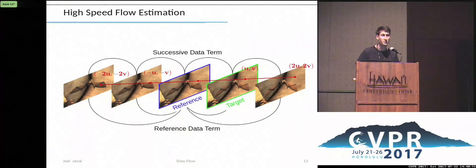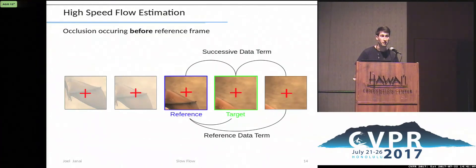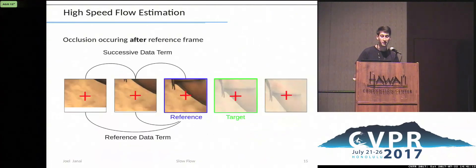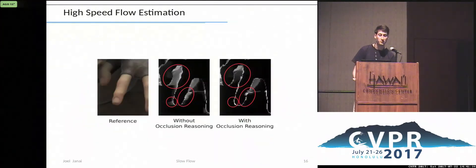To prevent this, we alternate between a continuous flow and a discrete occlusion optimization. Let's focus on one pixel to understand the occlusion reasoning. The occlusion variables turn off backward data terms in case of an occlusion occurring before the reference frame, as illustrated by the wing of the dragon. Or considering a different pixel, indicated by the red cross, the occlusion variables turn off forward data terms in case of an occlusion occurring after the reference frame. The occlusion reasoning improves the estimation in occluded regions, as can be seen in these error plots of a moving finger from Sintel. White represents a larger error.